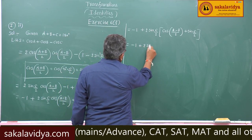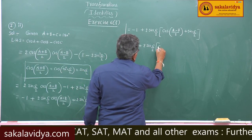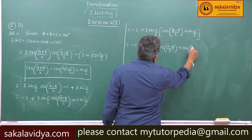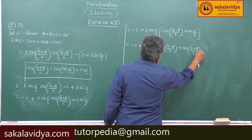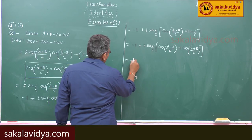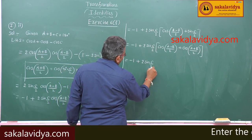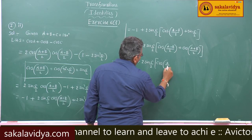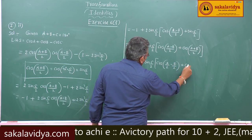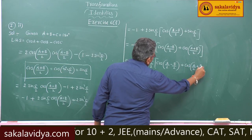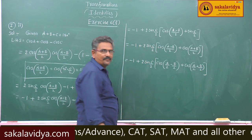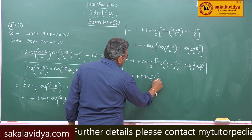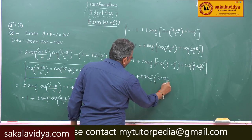So this gives minus 1 plus 2 sin(c/2) times cos of (a minus b)/2 plus cos of (a plus b)/2. We can write this as minus 1 plus 2 sin(c/2) into 2 cos(a/2) cos(b/2).